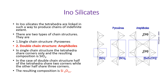Coming to the inosilicates: the tetrahedra are linked to produce chains of indefinite extent. There are two types of chain structures — single chain and double chain. The single chain is for pyroxenes, whereas in amphiboles we see the double chain structure. In the double chain structure, half of the tetrahedra share two corners while the other half share three corners, resulting in the composition Si4O11.